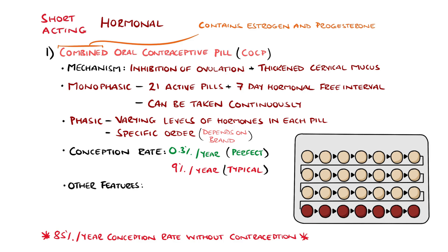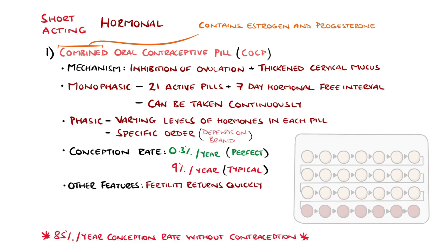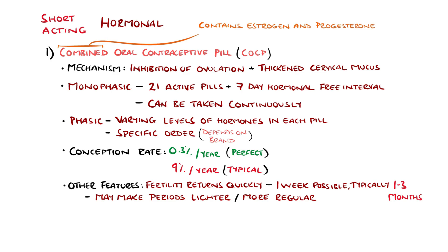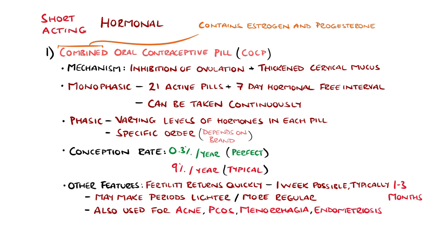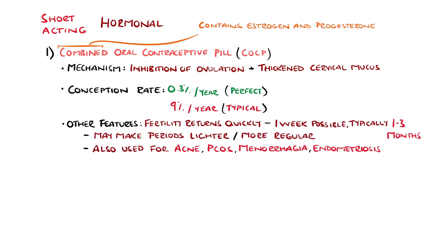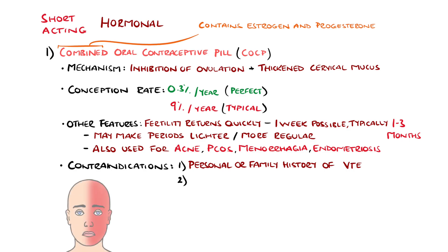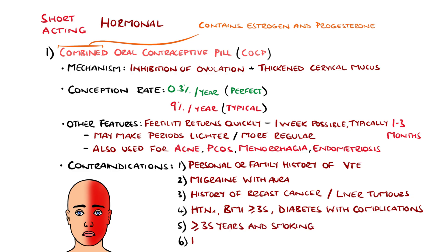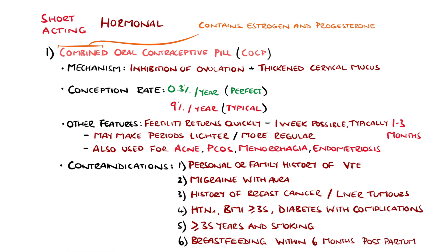Fertility typically returns quickly following discontinuation of the pill, which can be as soon as 1 week, but typically 1-3 months, and may also have the effect of menstrual bleeding becoming lighter and more regular, although this isn't the case for everyone and there may be spotting for several months. The combined pill can be used for other reasons than contraception, including acne, polycystic ovarian syndrome, menorrhagia, and endometriosis. Contraindications to combined contraception include a personal or family history of venous thromboembolism, migraine with aura, history of breast cancer or primary liver tumours or disease, uncontrolled hypertension or BMI over 35, diabetes complications, a smoker aged 35 and above, or someone who is breastfeeding within 6 months postpartum.